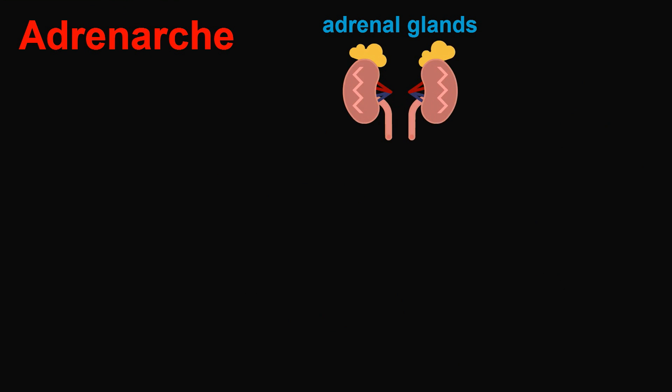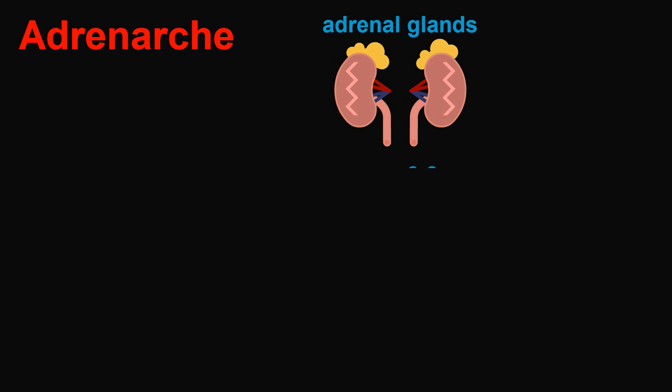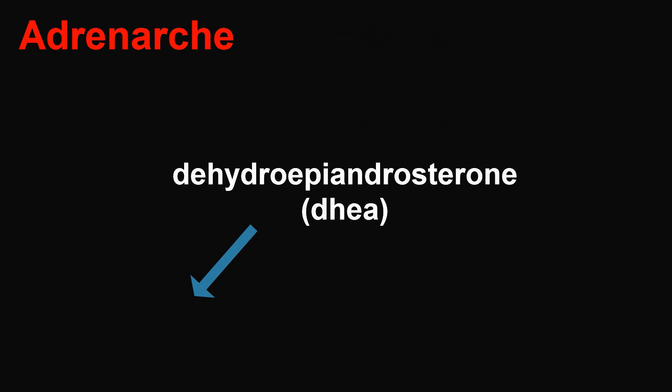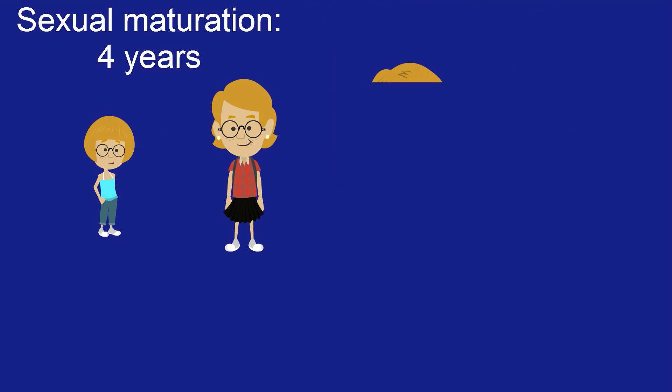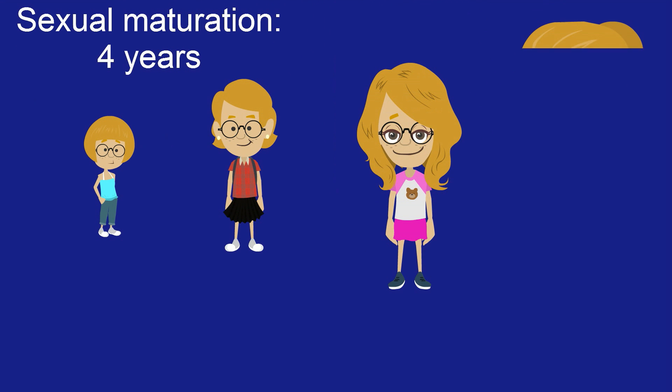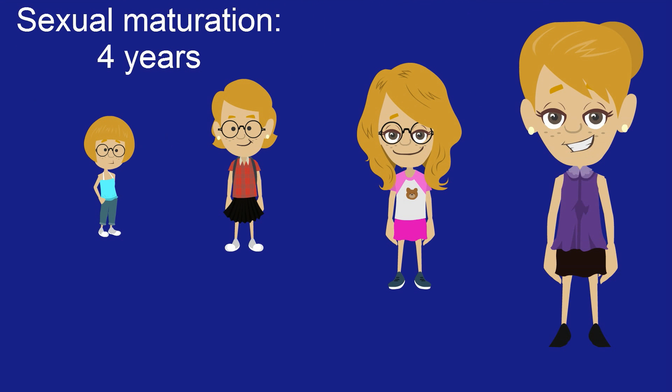The ovary is not the only source of sex hormone production in women. Adrenarche — the production of androgens from the adrenal glands — begins at approximately six to eight years for girls. This involves increased production of dehydroepiandrosterone, which can be converted to the more potent androgens testosterone and dihydrotestosterone.